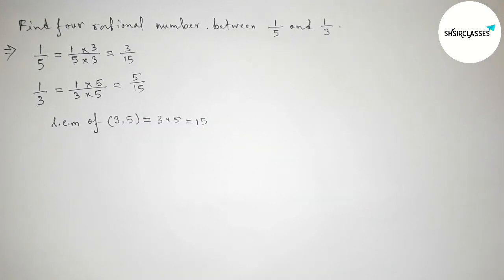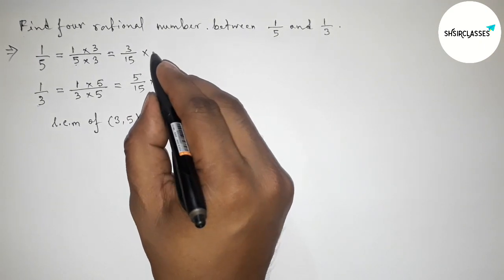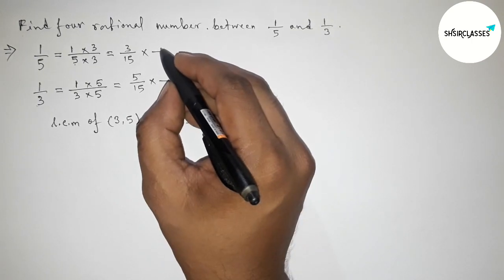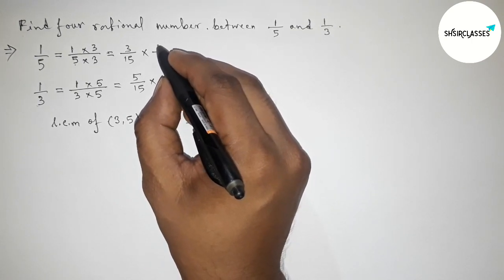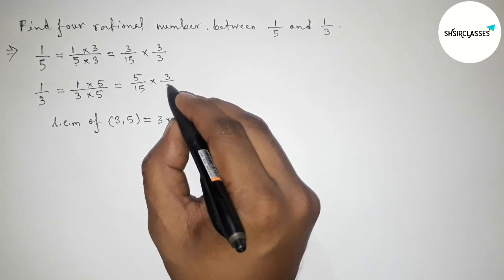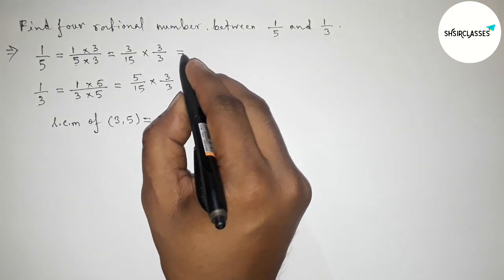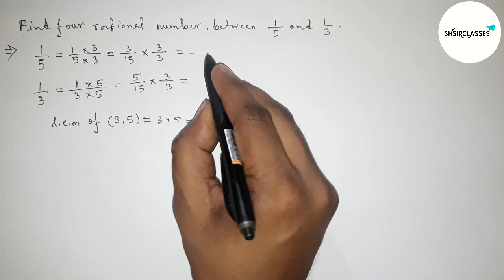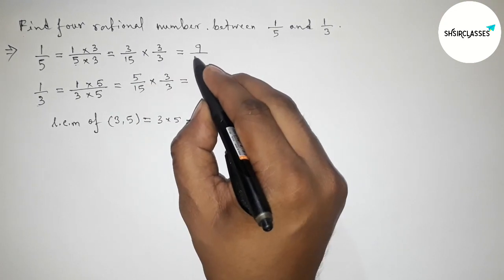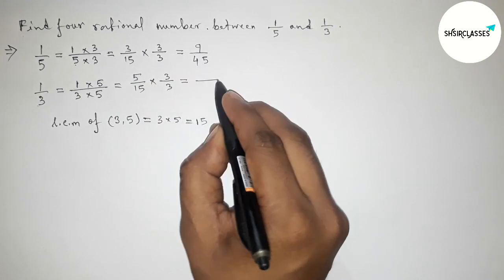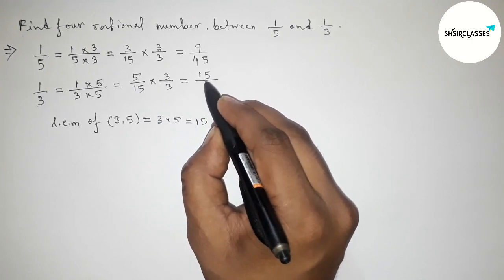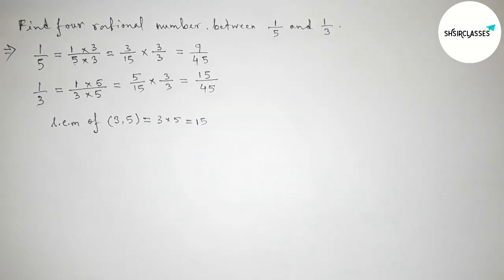Now for 4 rational numbers, we have to multiply both rational numbers by a further number. Taking 3 up and down for both. Multiplying both numbers gives us 9 by 45 and 15 by 45.